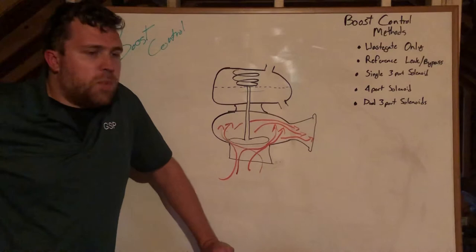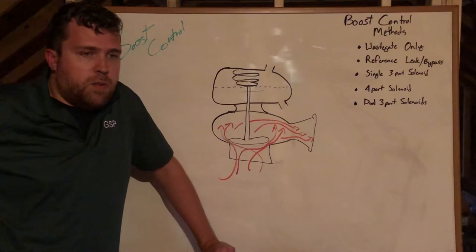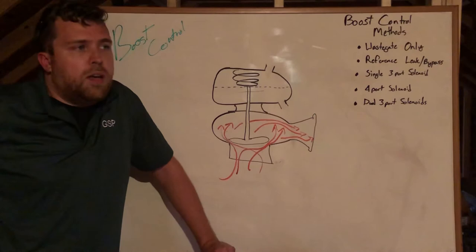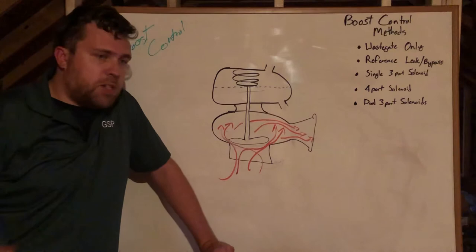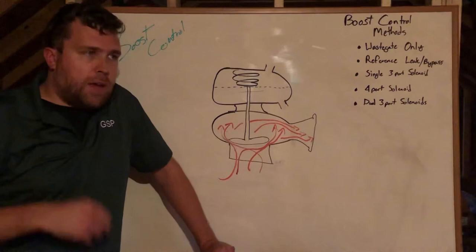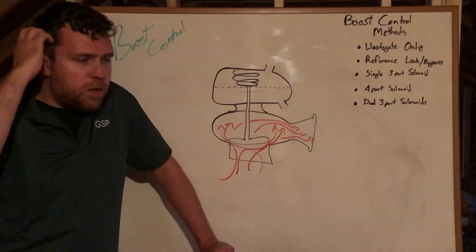The way that a turbo setup works is: your exhaust gas coming out of the engine goes into a turbine housing, crosses the turbine, and basically spins a wheel like a hamster wheel. That is connected by a shaft to a compressor wheel that is taking fresh air from outside in and compressing it, creating boost that goes through an intercooler, not always, and into your engine.